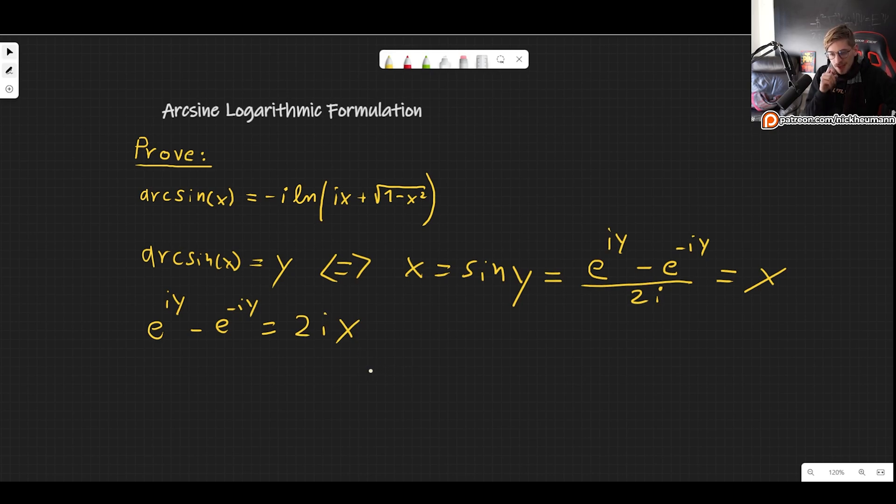Now, how do we get rid of this y? Because what we want to, or basically how can we apply the natural log here? Well, applying the natural log at the moment isn't really feasible because we don't have one single exponential, we have two.